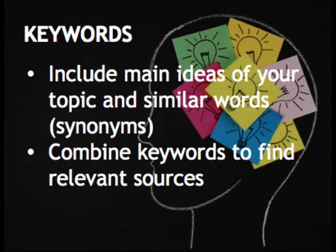So once you have a solid research question, it's time to start thinking about resources such as ebooks and scholarly articles. The trick to finding good resources is making a list of keywords that describe your topics. Keywords include the main ideas of your topic along with words that are similar, also known as synonyms. You can combine keywords in our library databases or catalog to find the most relevant sources available. In the Find Books and Articles tabs, you will also find more information on how this is done.